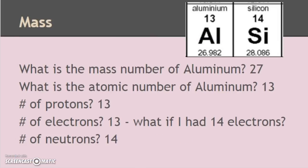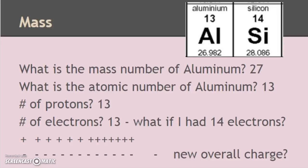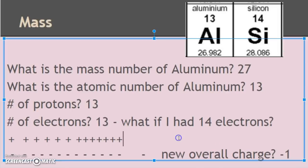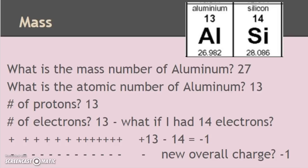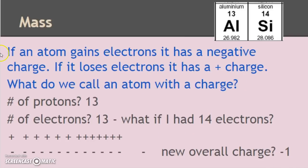What if aluminum had 14 electrons — what if it gained an electron? It had 13 positives and 13 negatives, but now it has an extra negative. The new charge is negative 1: 13 positives minus 14 equals negative 1. When you gain electrons, the more you gain, the more negative you become — like owing more debt. If an atom gains electrons, it has a negative charge; if it loses electrons, it has a positive charge. What do we call an atom with a charge? It's an ion.